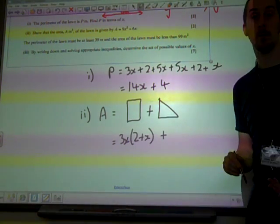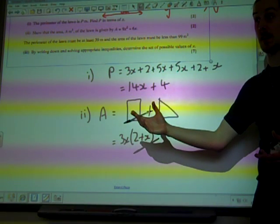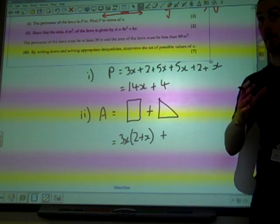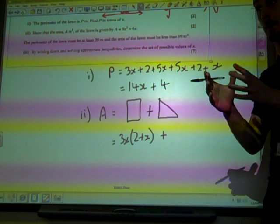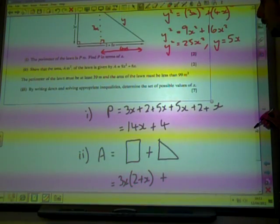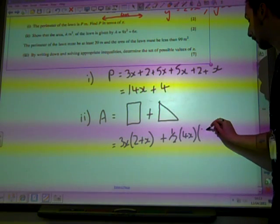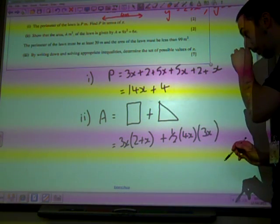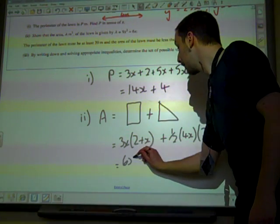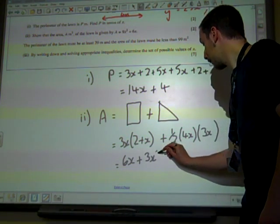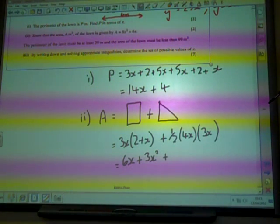And the triangle, remember the area of the triangle, we're going to come back to this in core 2, but at the moment we know the area of the triangle as being half the base times the height. So that's a half of 4X times the height, that was 3X, which gives us 6X plus 3X squared plus 6X squared.